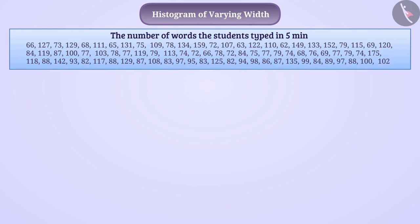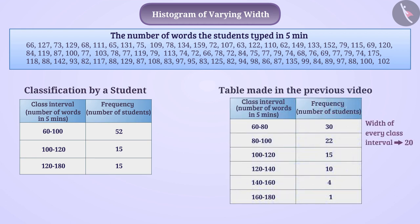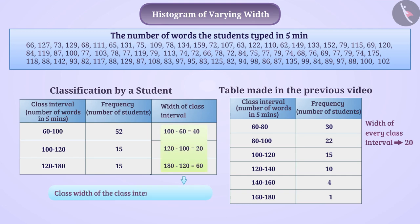Suppose a student classified these data in a different way. Is this table the same as the one made in the previous video? No. Here we see that the class width of the first class interval is 100 minus 60, equal to 40. The class width of the second class interval is 120 minus 100, equal to 20, and the class width of the third class interval is 180 minus 120, equal to 60. Thus the class widths of the class intervals are different in this frequency distribution table.